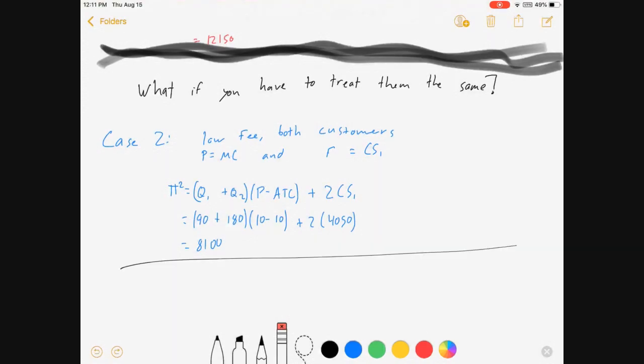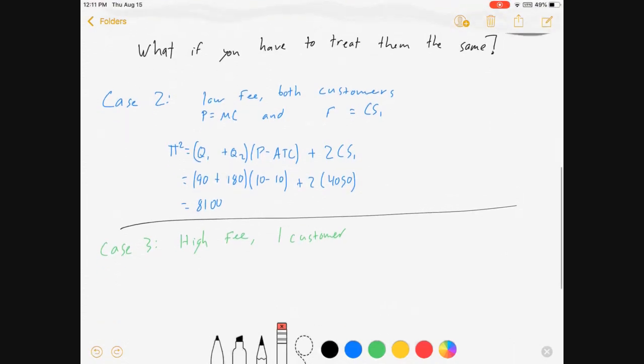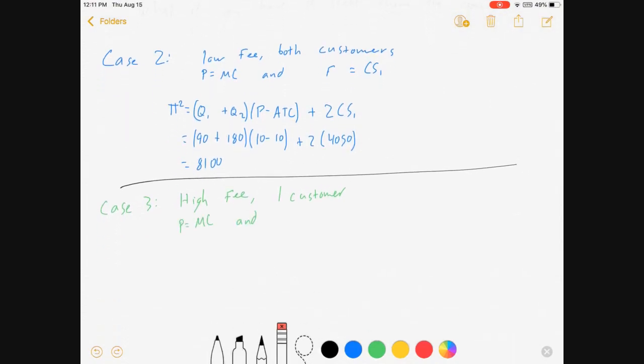Case 3: what if I charge a high fee, only capturing the high customer, a high enough fee to drive the low-paying customer out of the market? Again, we're keeping marginal cost pricing. We're going to set the fee equal to consumer surplus 2, which means Q1 will go to zero because the fee is greater than his consumer surplus.